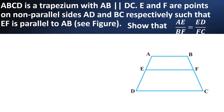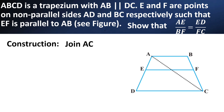By looking at the problem, we can prove the relation by using the Basic Proportionality Theorem (BPT). So now we can join AC or BD. Let us do a construction: join AC, which meets EF at G.